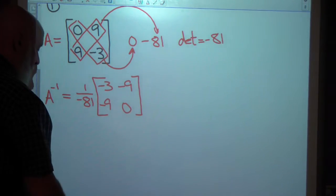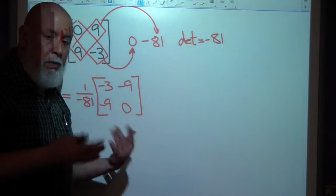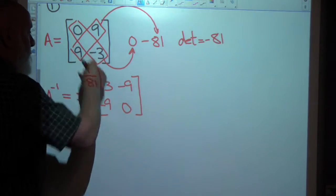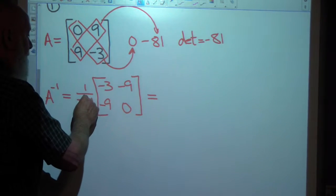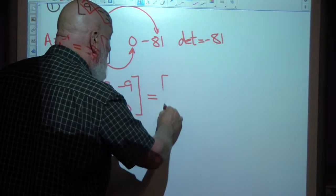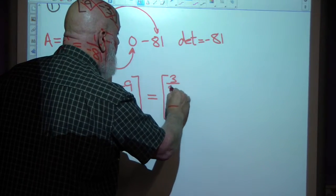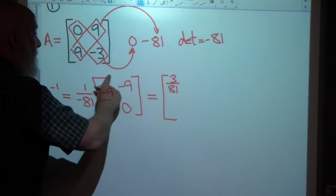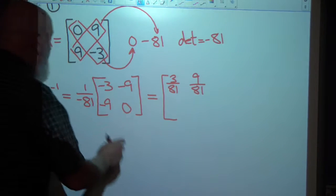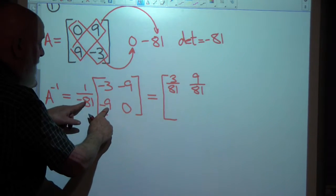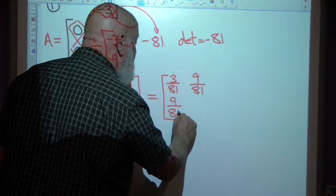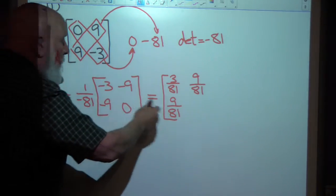Now I'm going to use scalar multiplication and multiply every element of this matrix by 1 over the determinant, which gives me the inverse of this matrix. Negative 1 over 81 times negative 3 is positive 3 over 81. Negative 1 over 81 times negative 9 is positive 9 over 81. And negative 1 over 81 times 0 is of course 0.